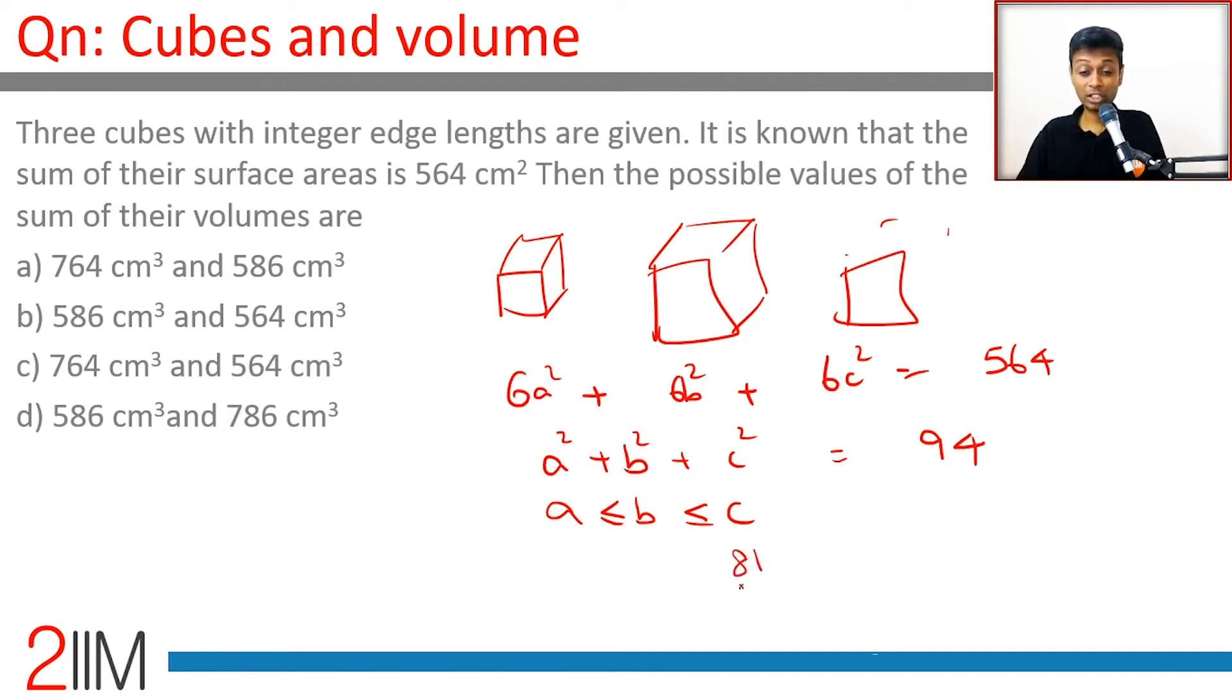The other two should add up to 13. So 2 square plus 3 square plus 9 square is 94. That works quite brilliantly. 2, 3, 9 works. But the answer is telling us two possibilities exist.